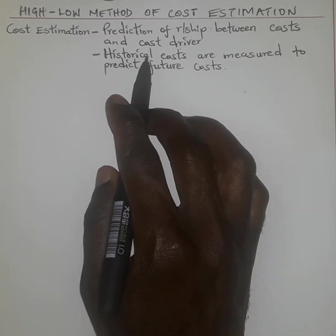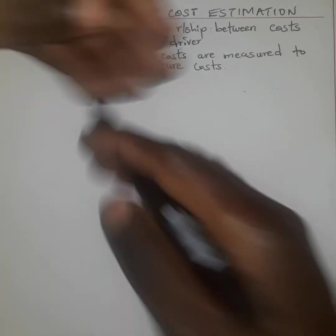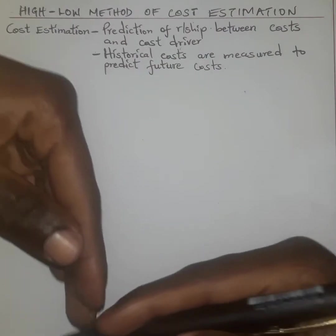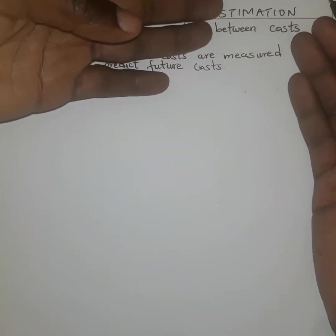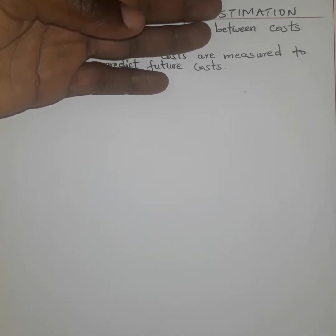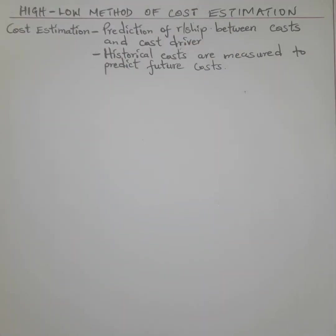Historical costs are the costs that a particular business had incurred in the past. We simply use whatever had been incurred in the past to make a prediction of what is going to be incurred in the future, instead of making some new cost estimate that has not yet been incurred.